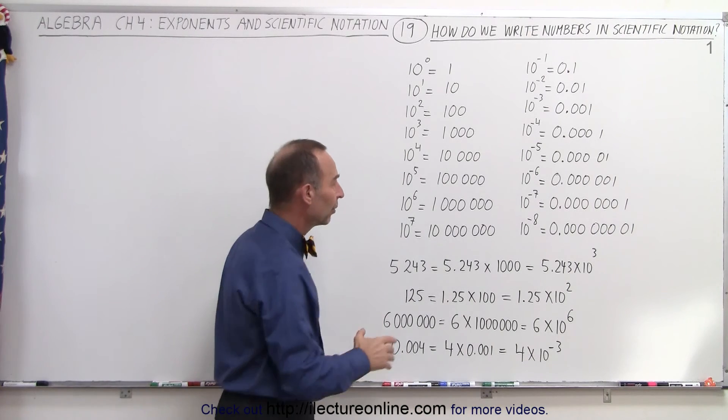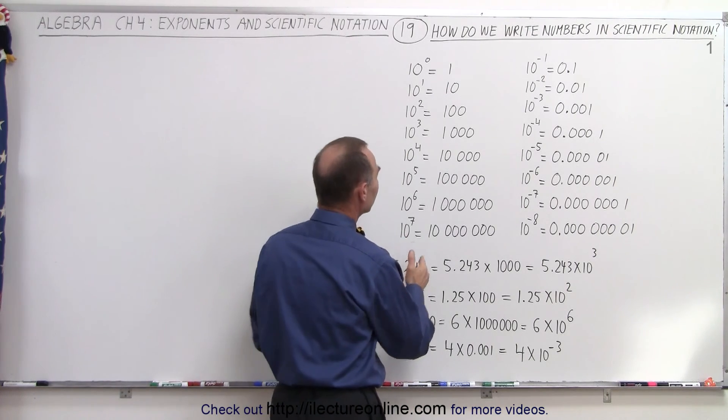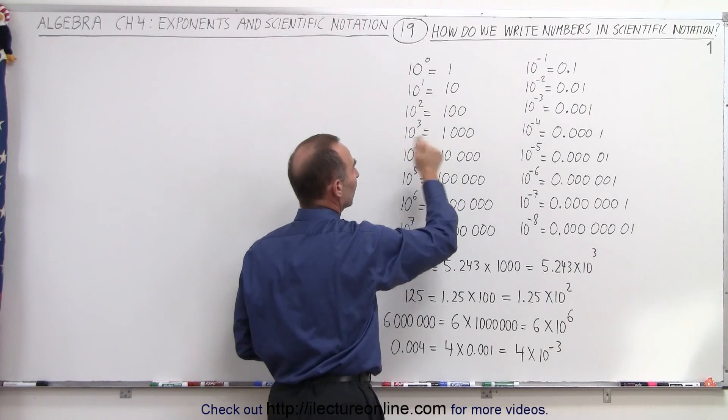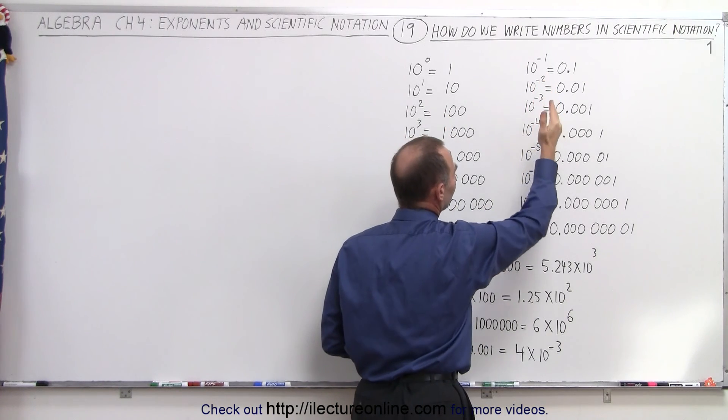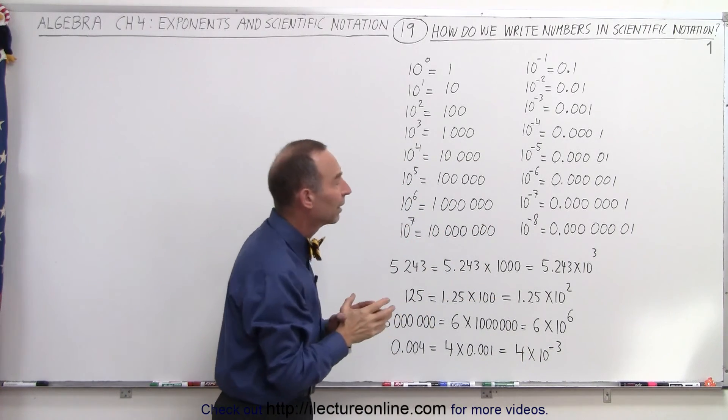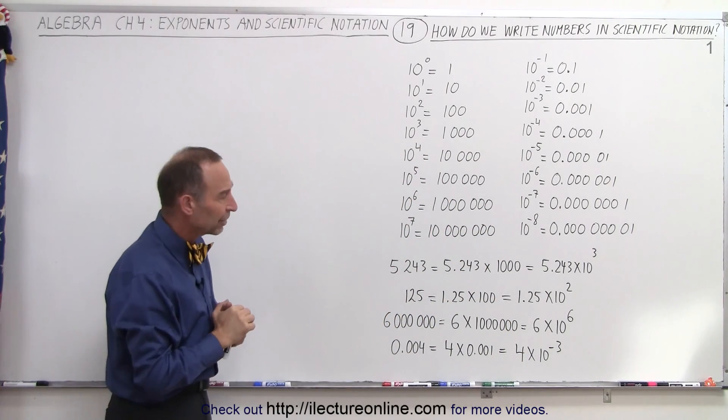So it's all about multiplying some number times 1, 10, 100, 1,000, 10,000, so forth, or times 0.1, 0.01, 0.001, and so forth. So that's the format on how we write scientific numbers.